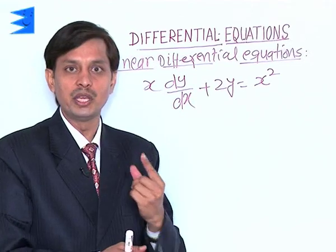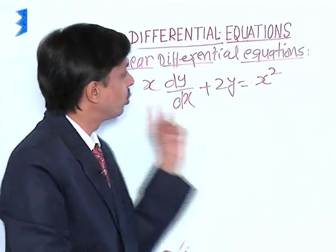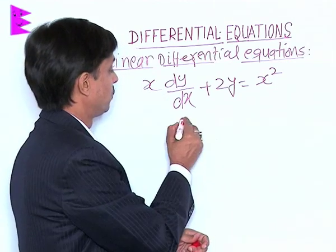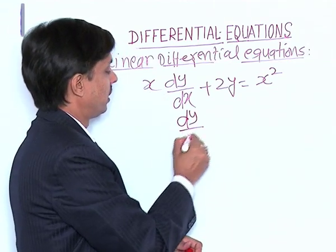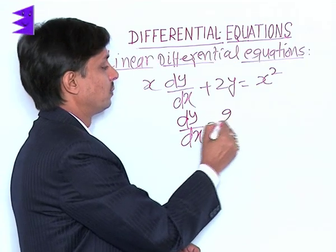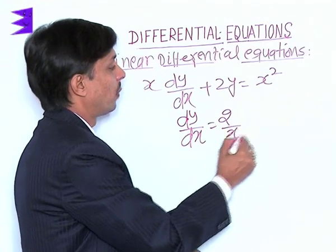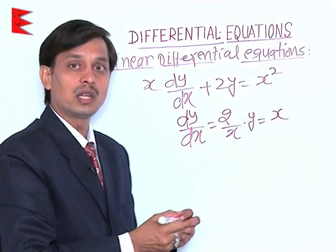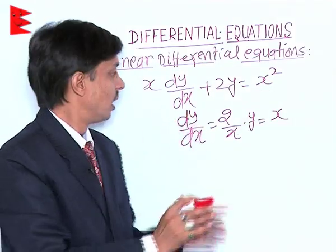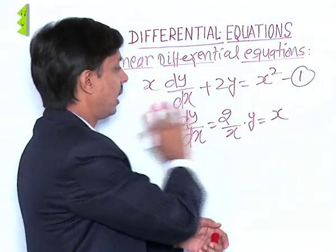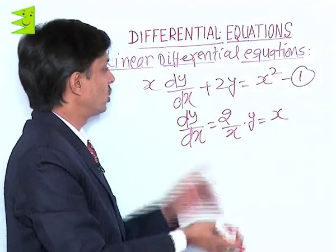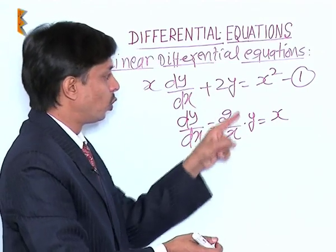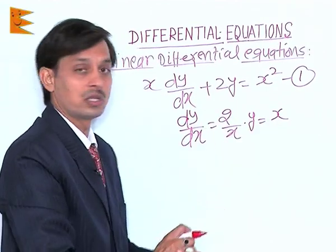dy/dx should be free. To make it free, we need to divide the entire equation by x. So if I divide by x, we get dy/dx = 2/x · y + x²/x, which is x. Dividing the entire equation by x gives us: dy/dx + (2/x)·y = x.